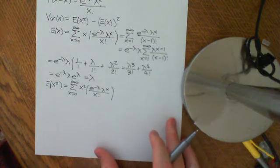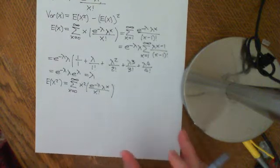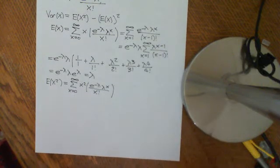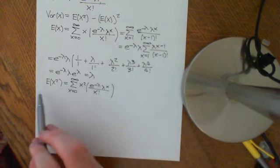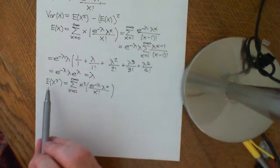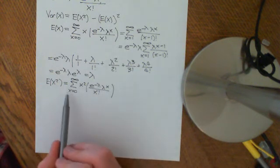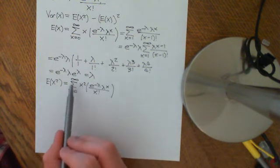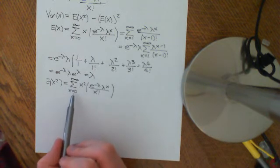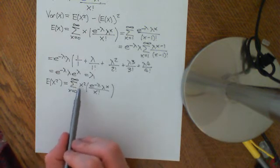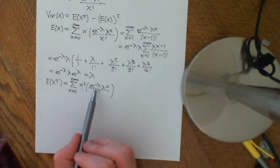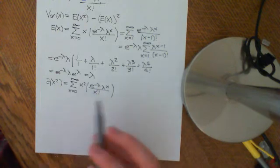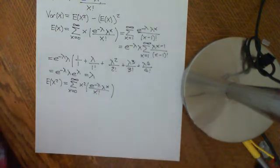We are in the process of calculating the variance of the Poisson distribution. We have employed the LOTUS and we are trying to find E[X²], which equals the sum from 0 to infinity of x² times e to the negative lambda, times lambda to the x over x factorial.